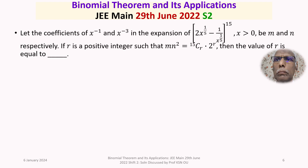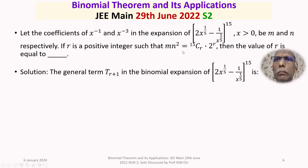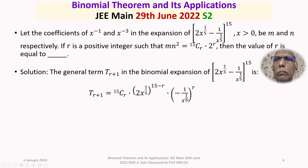We now discuss the solution in detail. The general term T(r+1) in the binomial expansion is given by: T(r+1) = 15Cr · (2x^(1/5))^(15-r) · (-1/x^(1/5))^r.